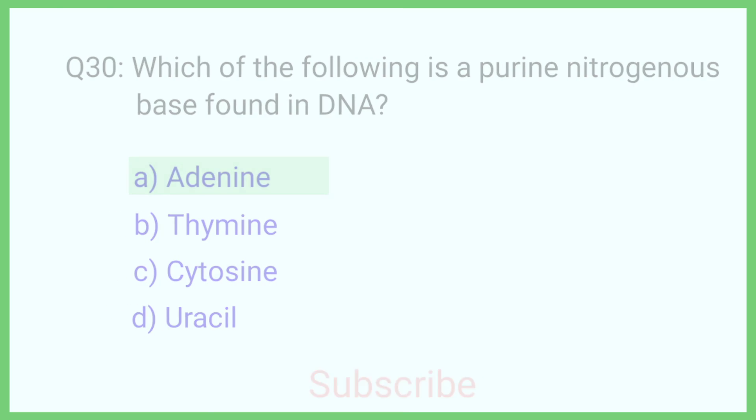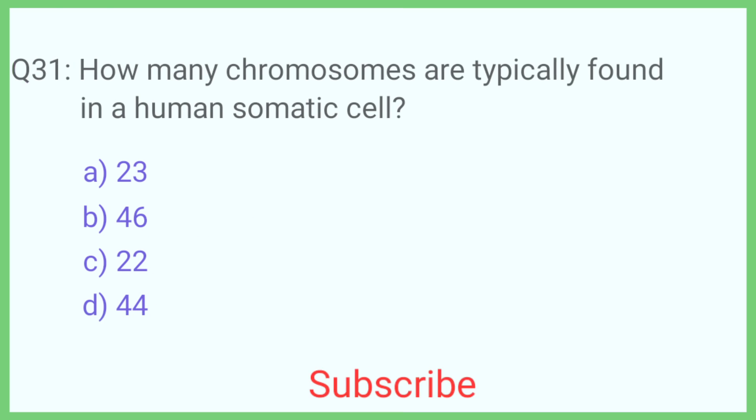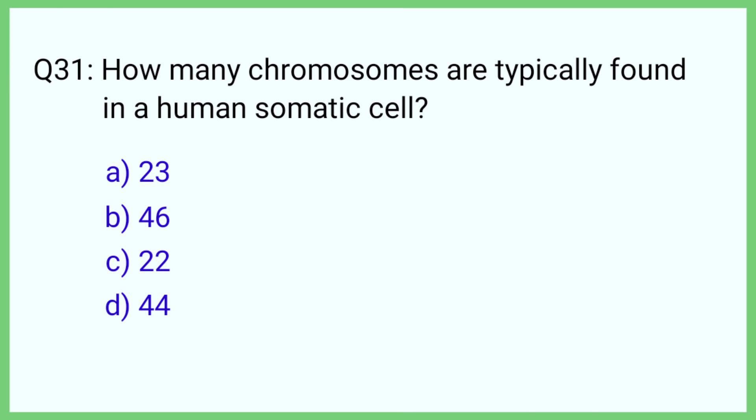Question number 31. How many chromosomes are typically found in a human somatic cell? The correct answer is option B: 46.